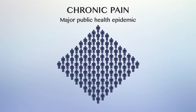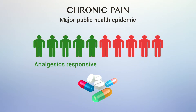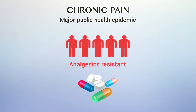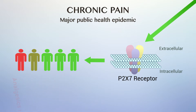Chronic pain is a major public health epidemic, debilitating more than 10% of adults. While some patients are responsive to commonly used analgesics, many are resistant to treatment. The P2X7 receptor is an emerging target for treating refractory pain.